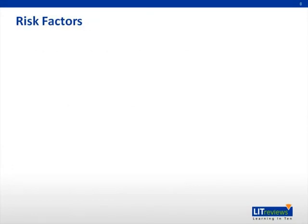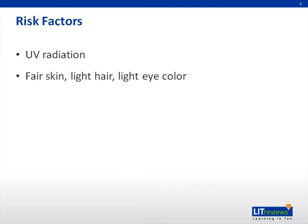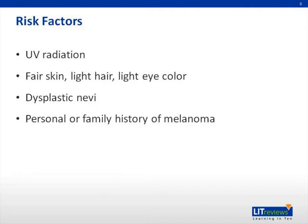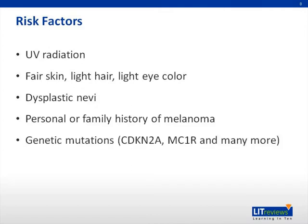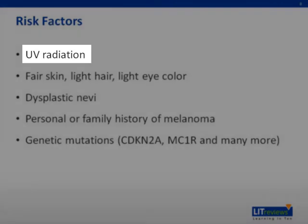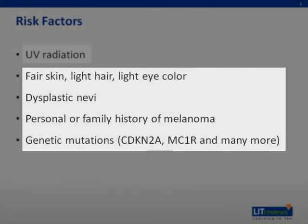The risk factors for melanoma are prolonged sun exposure or UV radiation, having fair skin, light hair, or light eye color, having multiple dysplastic nevi, a personal or family history of melanoma, and multiple genetic mutations have been identified, including the ones listed here and many more. Sun exposure is potentially a modifiable risk factor, while the others are generally not modifiable.